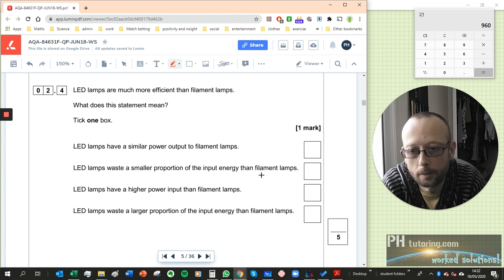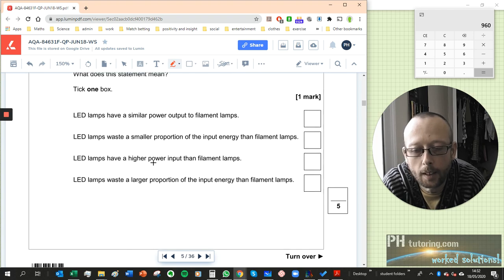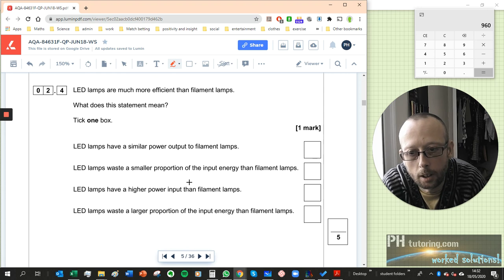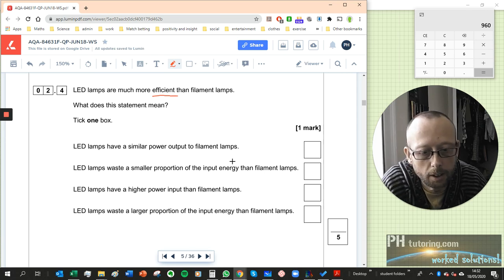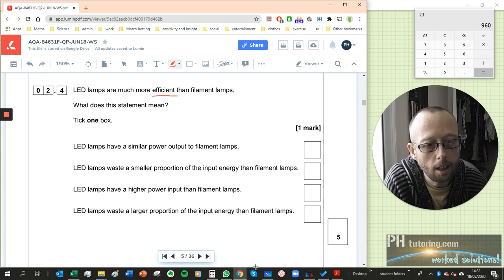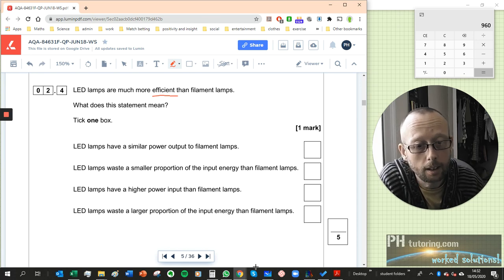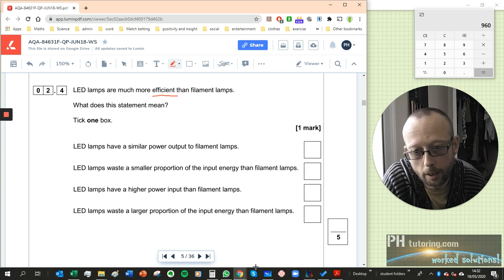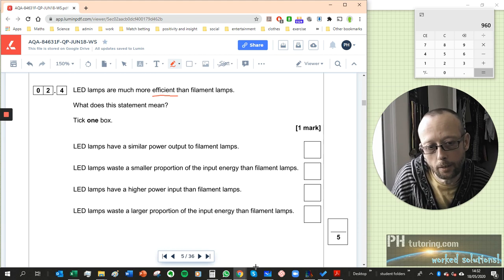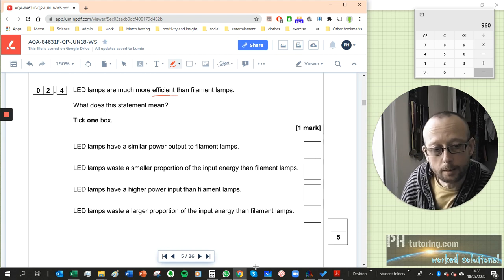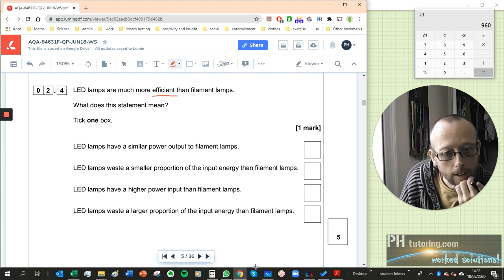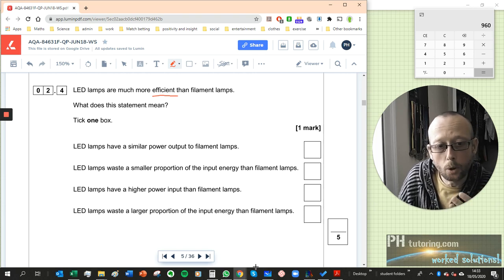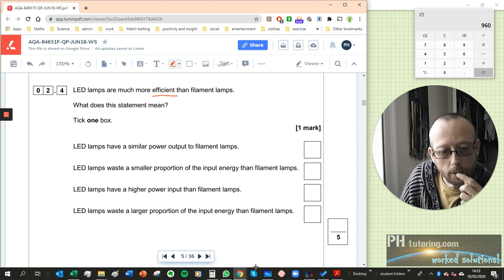So 2.4: LED lamps are much more efficient than filament lamps. What does this statement mean? Okay, what is this question testing? Well it's just testing that you understand what this word means. So what does efficient mean? It means that a higher proportion of the energy I put in gets used usefully. So let's say I put 100 joules in of energy and I only get 20 joules out as used, so in this case it would be used as light, maybe the other 80 gets used just to make it hot, and that in fact will be the case. So basically if it's very efficient then more of the energy gets used for light.